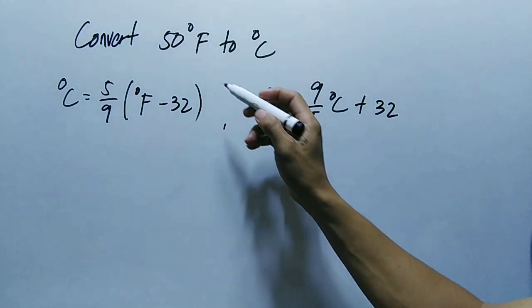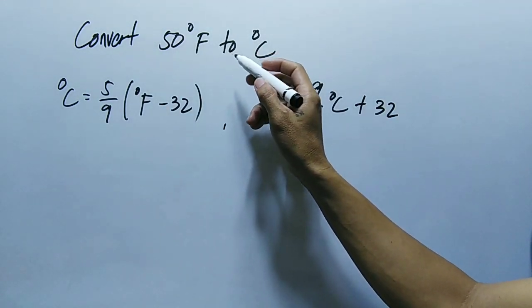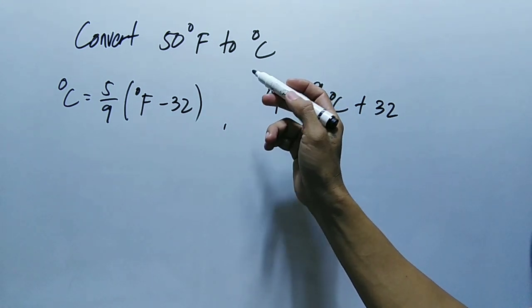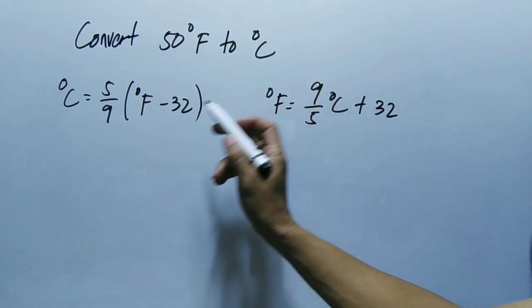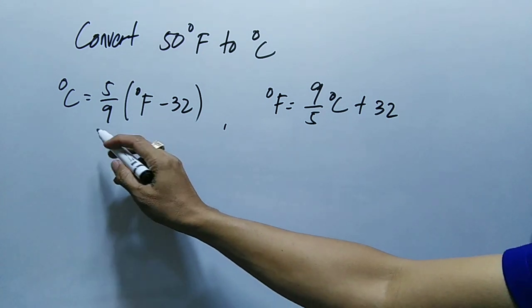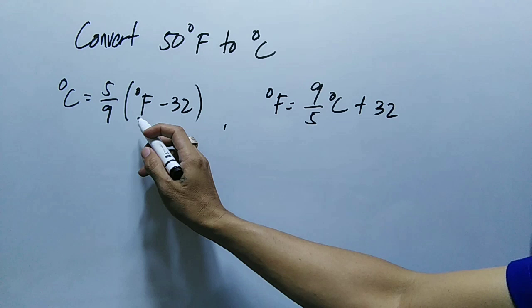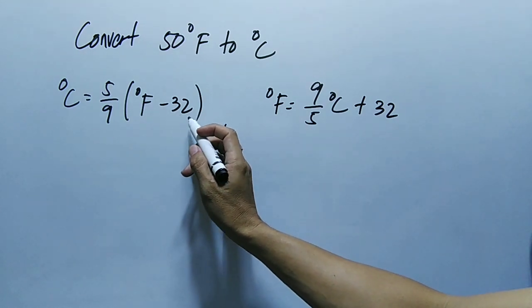Okay, so we're going to convert 50 degree Fahrenheit to degree Celsius. To convert degree Fahrenheit to degree Celsius, we have to use this formula: degree Celsius equals 5 over 9 times degree Fahrenheit minus 32.